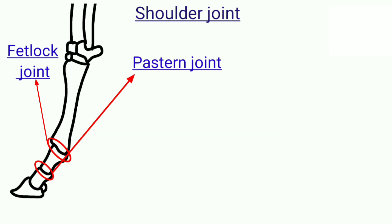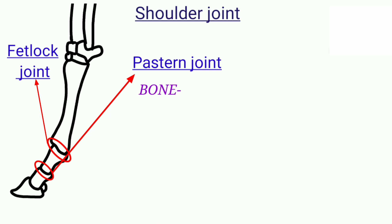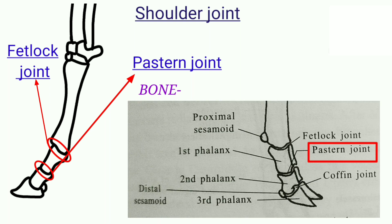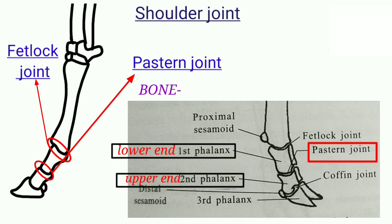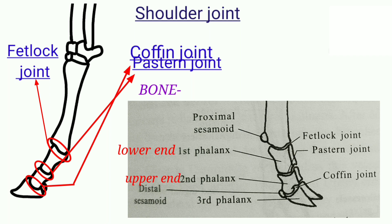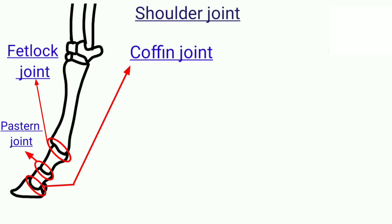Fifth is the pastern joint, also known as proximal interphalangeal articulation. The type of joint is hinge joint. The bones involved in the pastern joint are the lower end of the first phalanx and the upper end of the second phalanx.